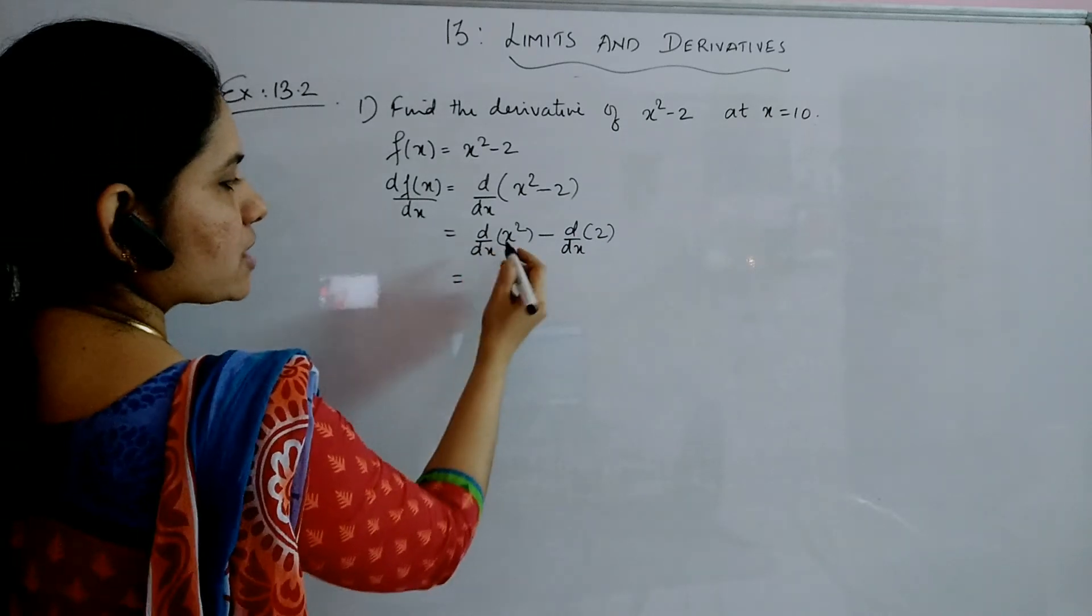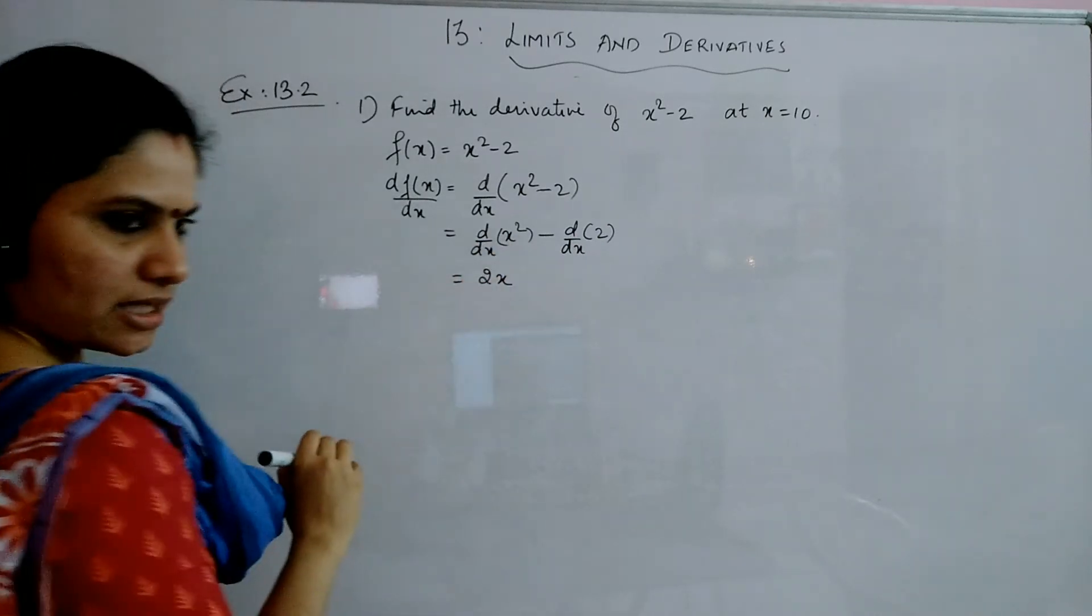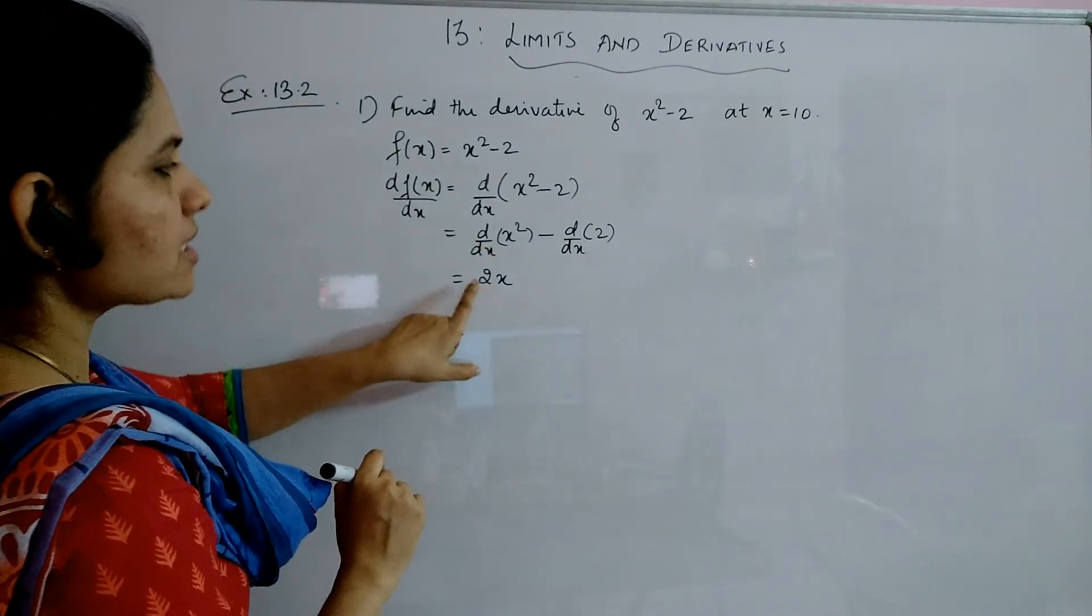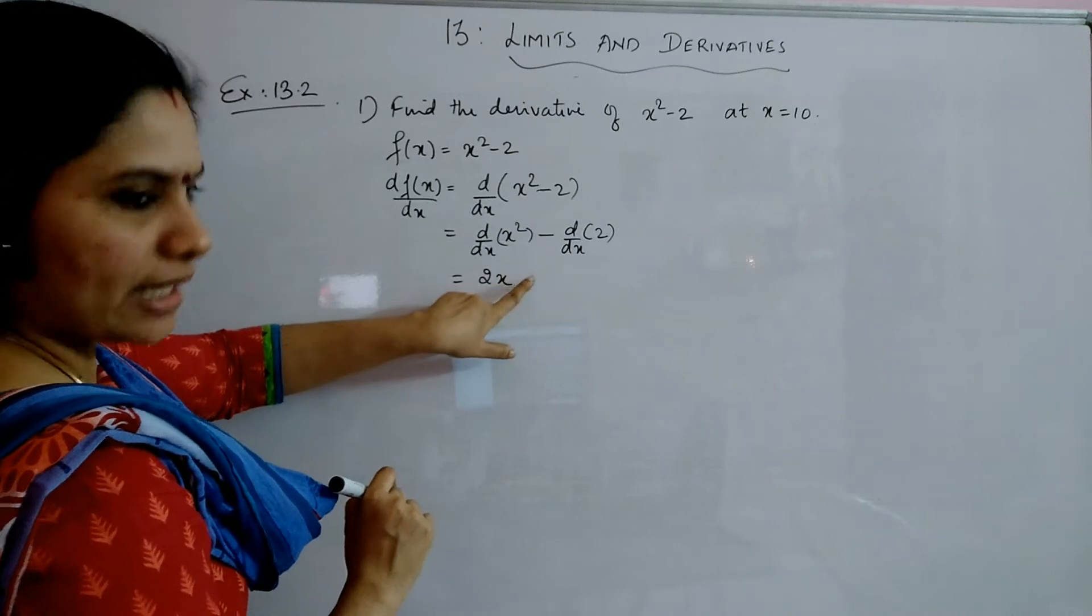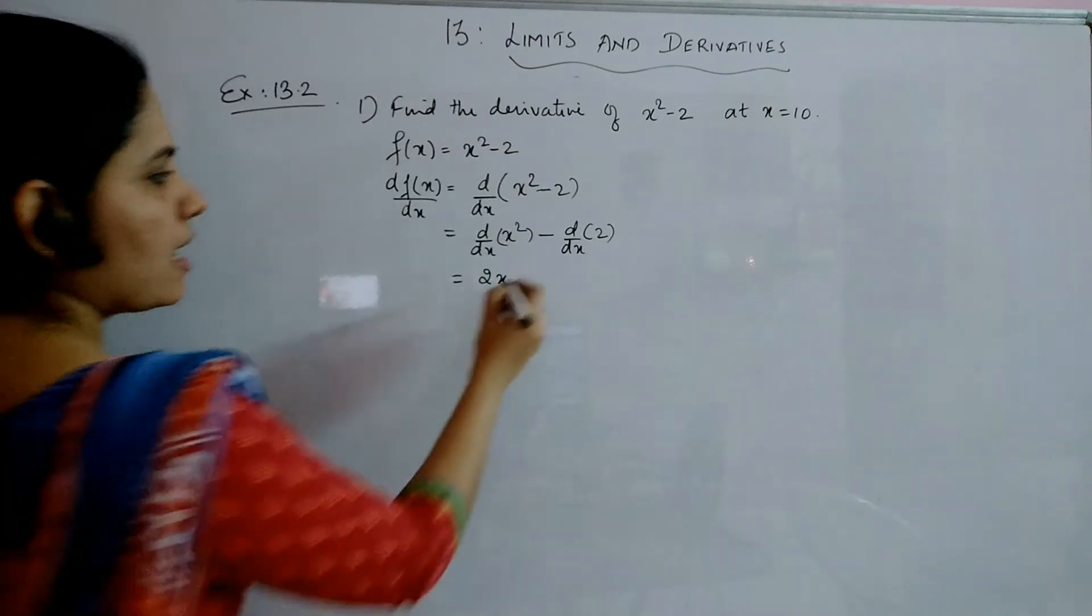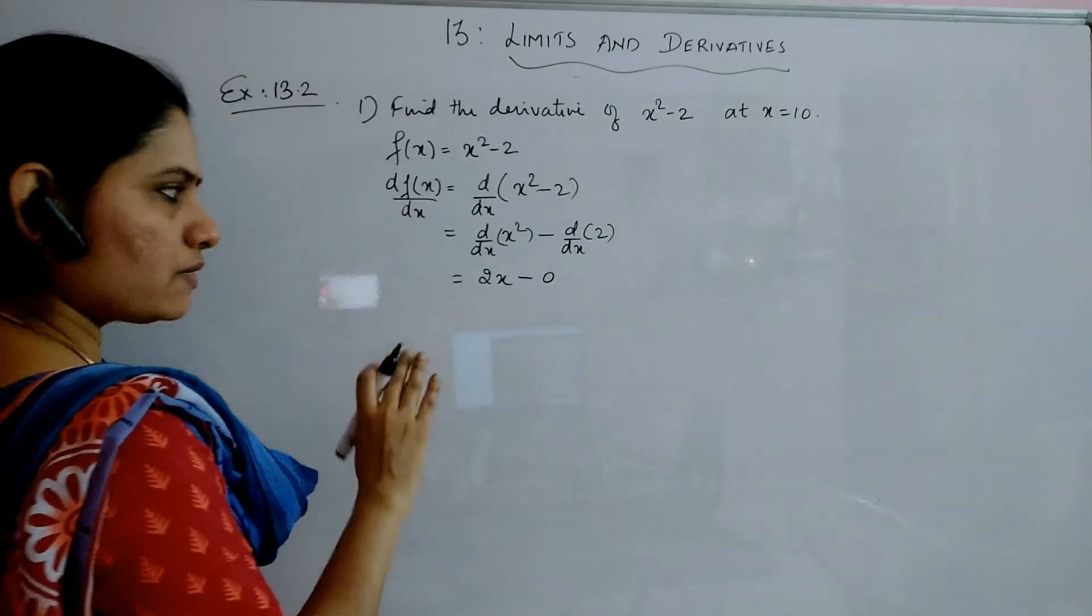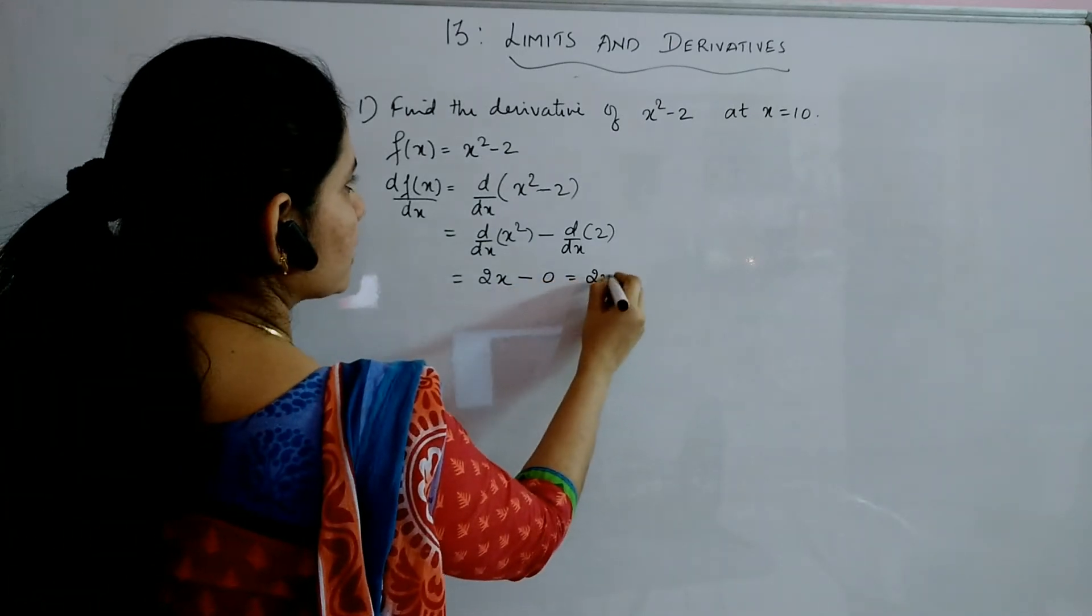Now, the derivative of x square is 2x using the formula x raise to n. Derivative of x raise to n is nx raise to n minus 1. You will get 2 into x raise to 2 minus 1, which is 2 into x, minus derivative of 2 is derivative of a constant which will give you 0. So the answer is 2x.